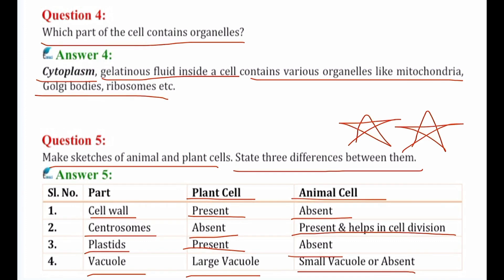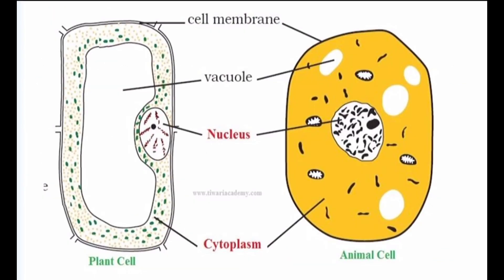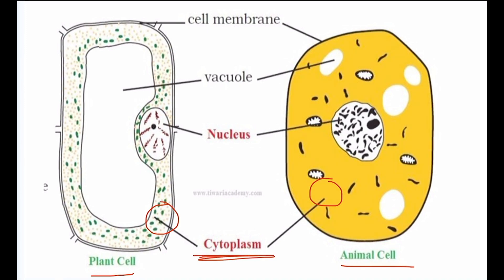Looking at the diagram of plant and animal cells: cytoplasm is present in both plant and animal cells — it is the fluid between the plasma membrane and the nucleus. The nucleus is a spherical structure generally present at the center of the cell, and it is present in both plant and animal cells.